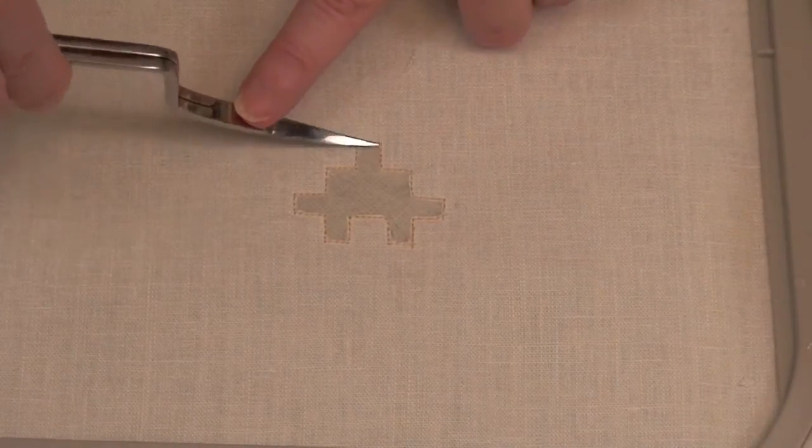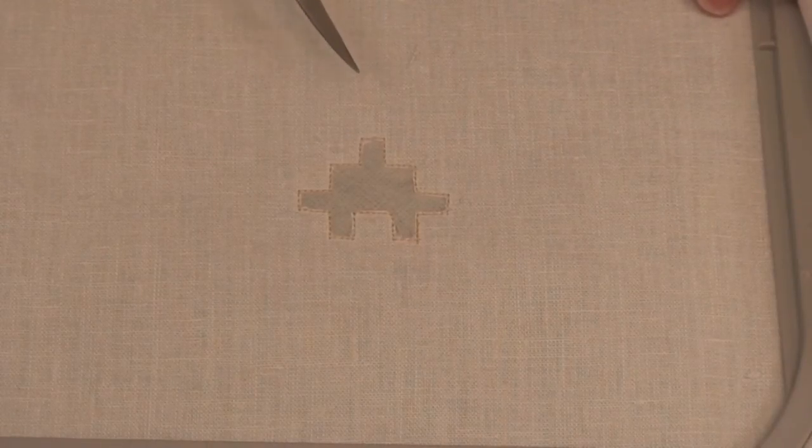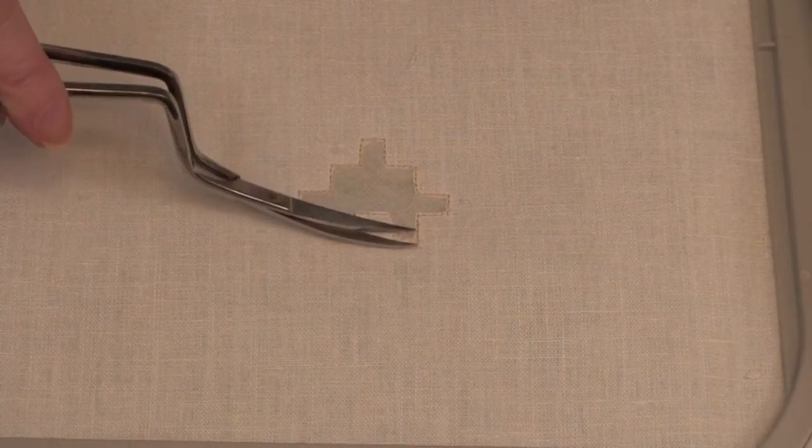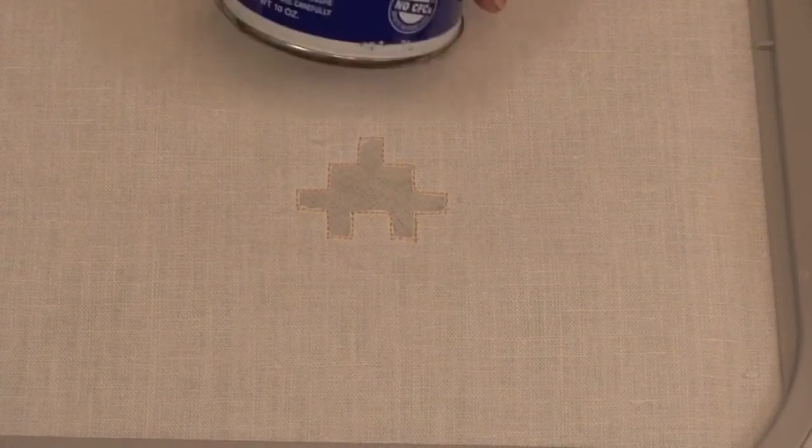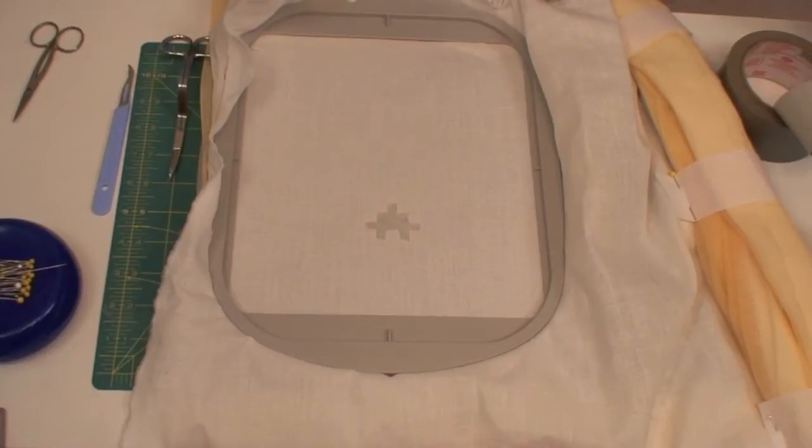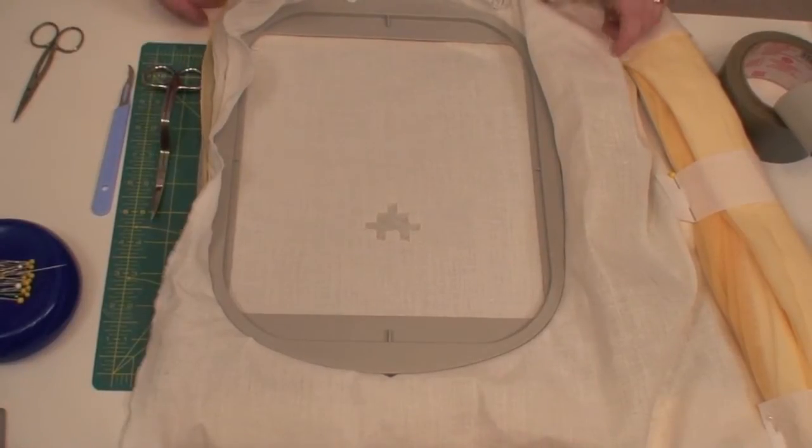Now one thing you do want to avoid is picking it up. Putting your fingers behind here to hold the fabric up so you can make it easier to trim. Because once you distort the tension in your hoop, your registration is going to be off. Before you put it back in the machine, make sure that you have all of your little fibers and stuff off. Some canned air works really well for that. And I'm ready to put it back in the machine.